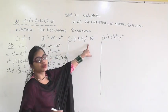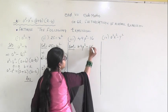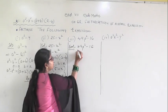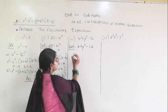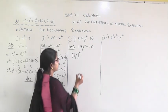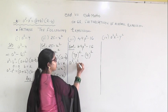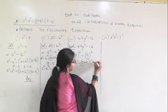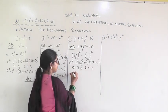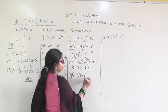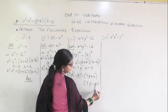In the third question: 49p squared minus 16. You have to bring it into the form of a squared minus b squared. So 49 can be written as 7 squared, and p squared is p times p. So the whole thing becomes (7p) squared minus 4 squared, since 4 squared is 16. Using the identity a squared minus b squared equals (a plus b)(a minus b), with a equal to 7p and b equal to 4, we get (7p plus 4)(7p minus 4). This is the answer.